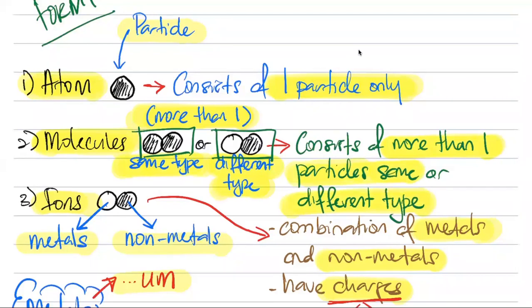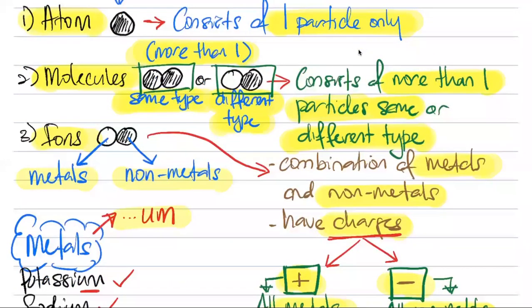Number three we have got ions. Now ions, if you notice, I'm drawing the same thing like molecules which is different, which means both the names are different. So in ions, the first name will be metal and the second name will be non-metal. What is the meaning of ions? Ions are combination of metals and non-metals.